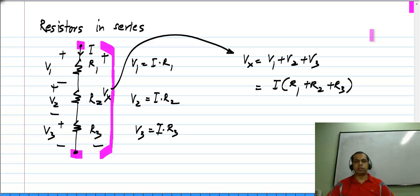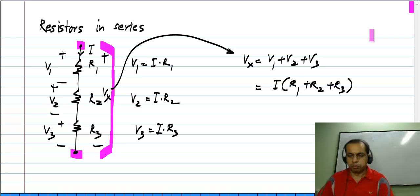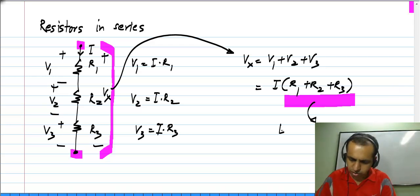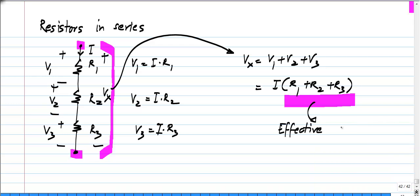That is the relationship between the voltage across the series combination and the current through the series combination. One thing you notice immediately is that this is a proportionality relationship as well — voltage is proportional to the current, and the proportionality constant happens to be R1 plus R2 plus R3. That is the effective resistance of the series combination.